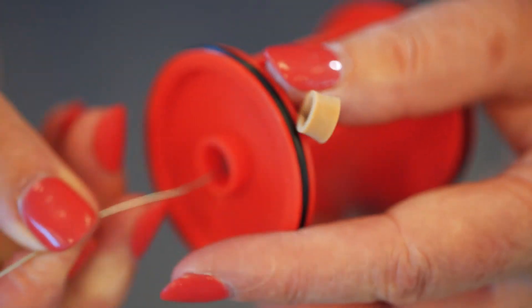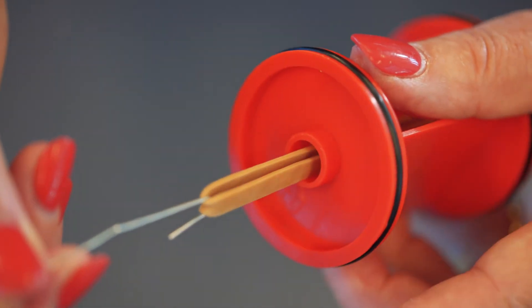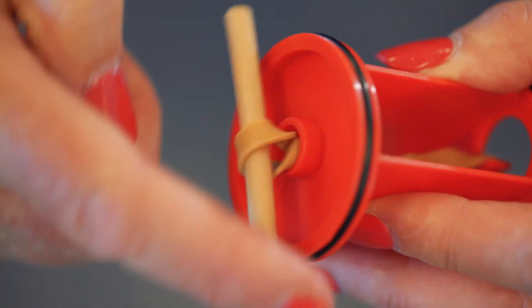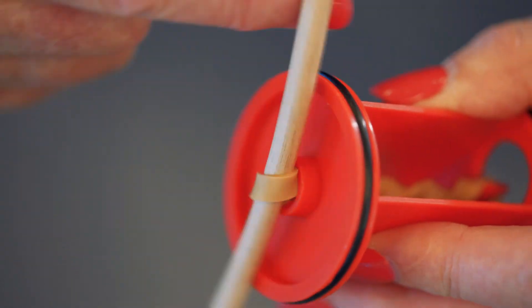I'll just put it through and hook it over the rubber band and bring it through the hole like this. Then I can put the dowel into that end of the rubber band and wind it up.